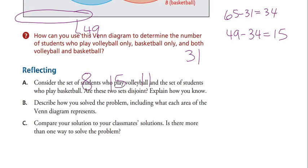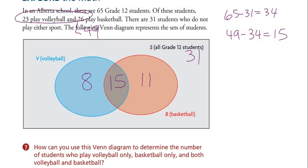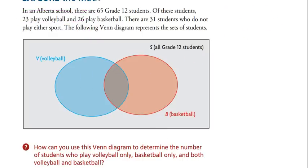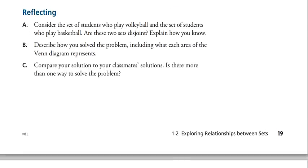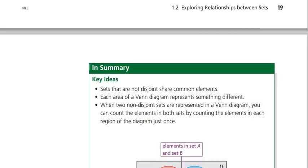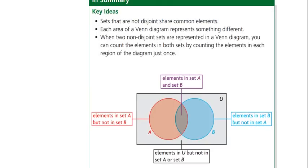Considering the students who play volleyball and the students who play basketball — are these sets disjoint? No, they're not separate sets; there is some overlap. Key idea: sets that are not disjoint share some common elements. Each area of a Venn diagram represents something different, and there are four areas.